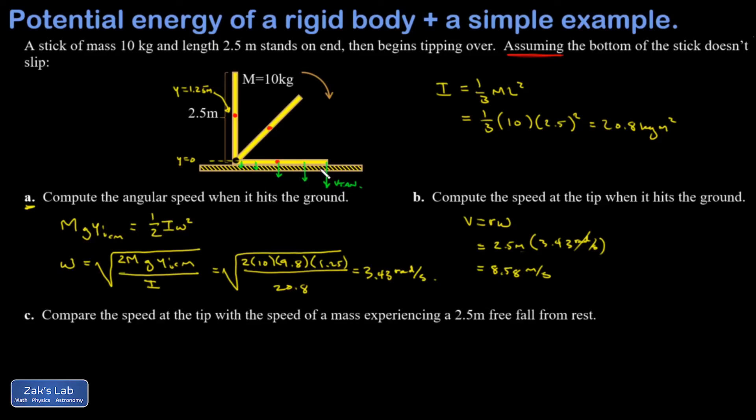And part C concerns something that I've always found to be fascinating about this problem. It just occurred to me one day in class to compare this to a free fall of an object that starts at the original height of 2.5 meters. So I'm going to put a mass up here and just fall straight down to the same height and find V final for that.